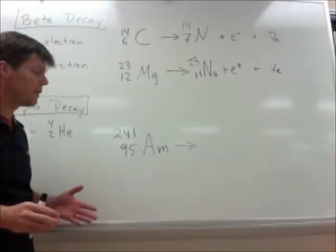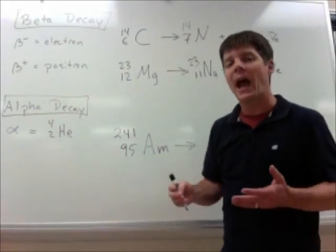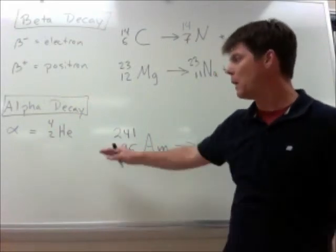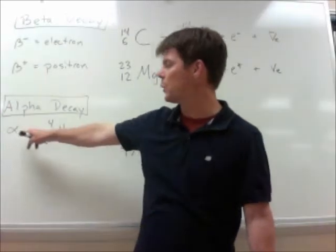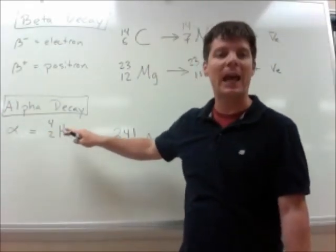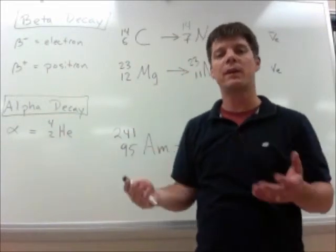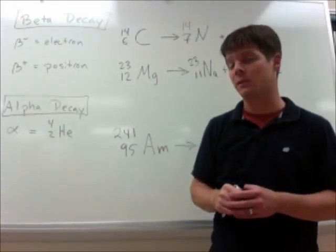Our final decay process is the process of alpha decay. Alpha decay is going to be responsible for producing alpha particles. We use this symbol for alpha, and an alpha particle is really a helium atom with two protons, two neutrons, with the electrons removed so that it has a positive charge.